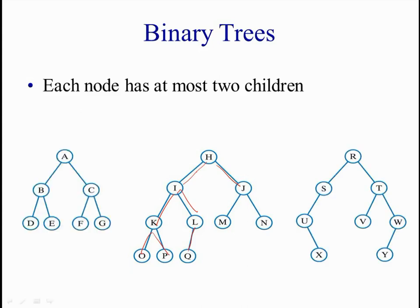A binary tree can appear in different structures like the ones you see here on the screen. The exact structure is determined by the order and the way we insert nodes while building the tree, or how we delete and update an existing tree. For example, if we come to the tree in the middle and try to delete a node like Q, then maybe L, and then node O...